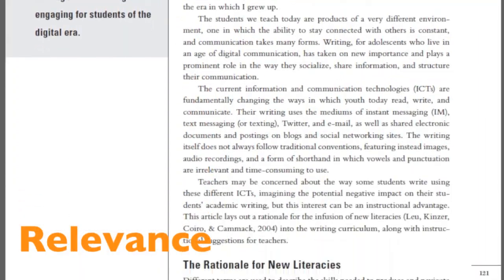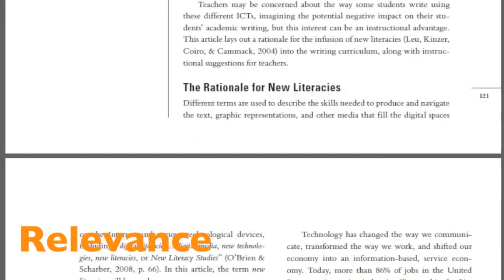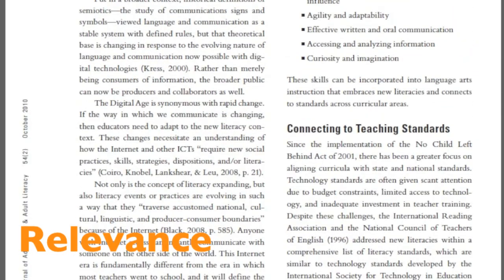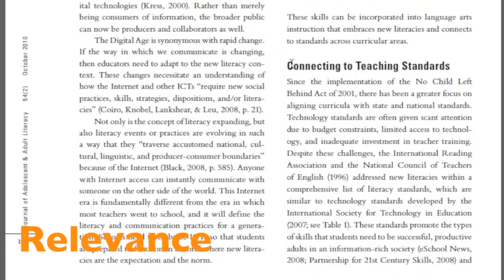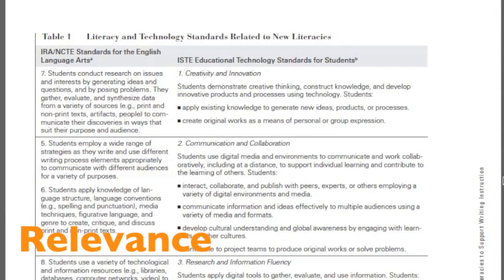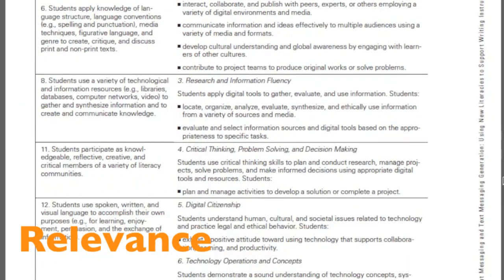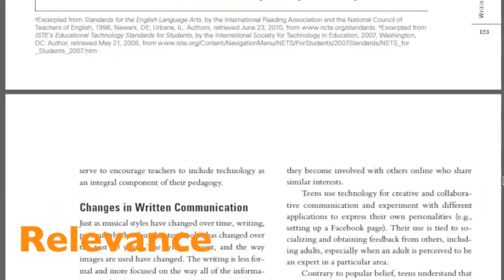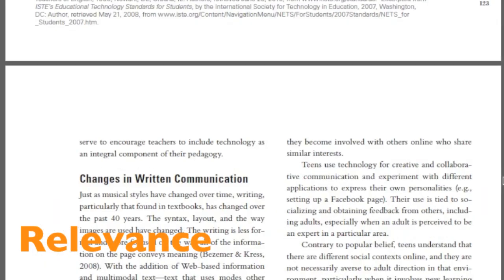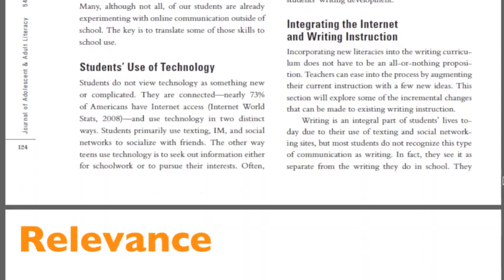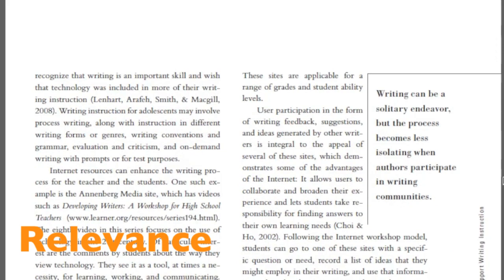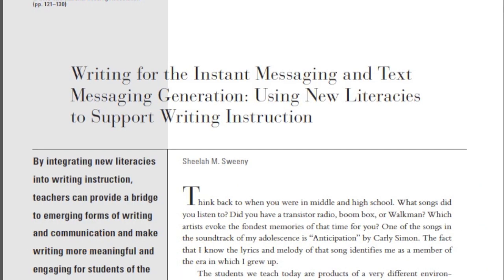Relevance is a very important criterion because if an article isn't relevant to your topic, it won't fit into your paper. Skim the headings and introduction or conclusion section of an article to see the main ideas. Also take a look at the language the author uses. This can help you determine if the article is at an appropriate level for your needs. In our article, the author does not use language that is too technical or complex, so it seems appropriate for a college-level research paper on texting and literacy.